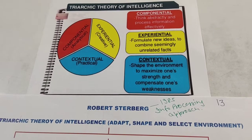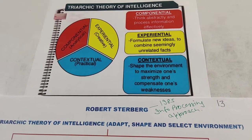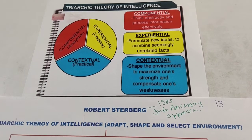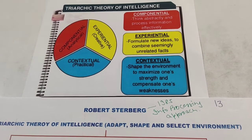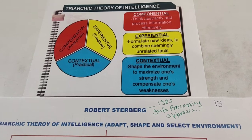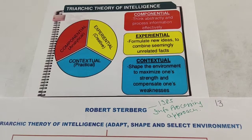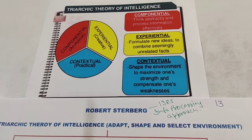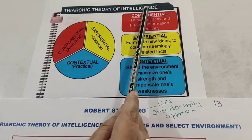Good morning everyone, welcome to Pioneer Convent School. We are going through the chapter on variations of psychological attributes, studying intelligence — specifically theories of intelligence. Today we will study a new theory: the Triarchic Theory of Intelligence.